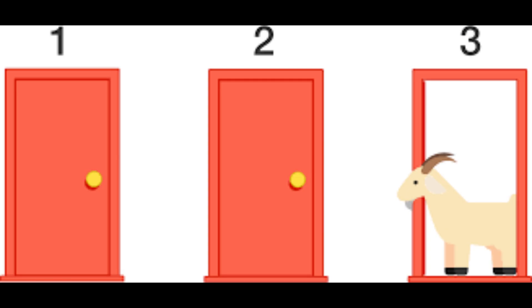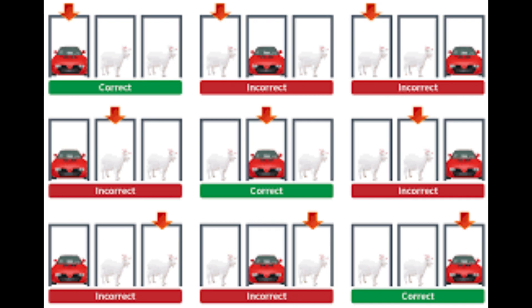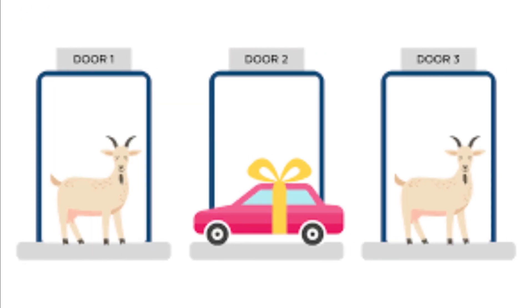In other words, switching gives you a two-thirds chance of winning, while sticking with your first choice only gives you a one-third chance of winning. It's a game of probability, not luck. The more doors Monty opens with goats behind them, the higher the odds that switching will lead to the car.